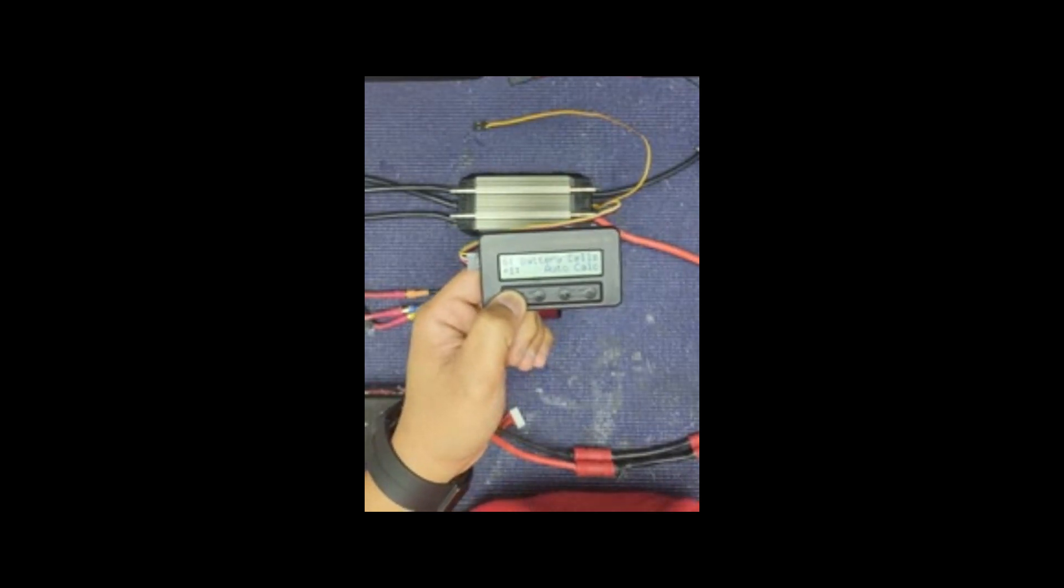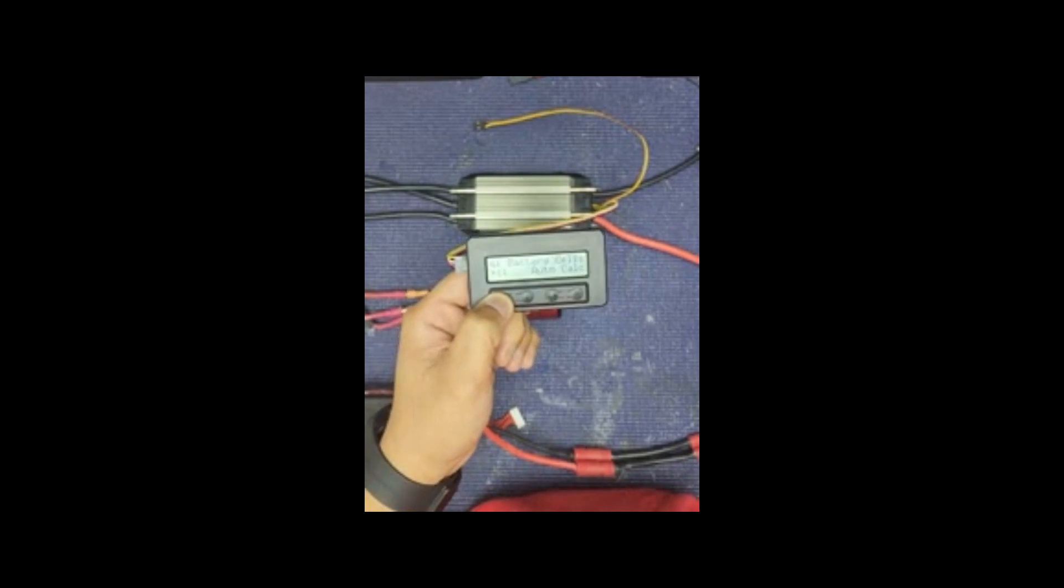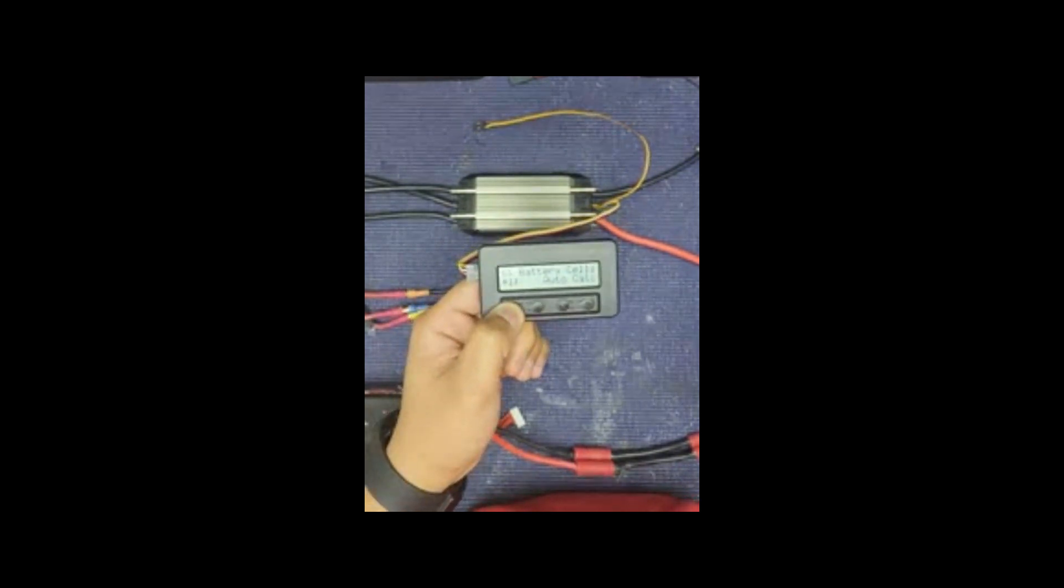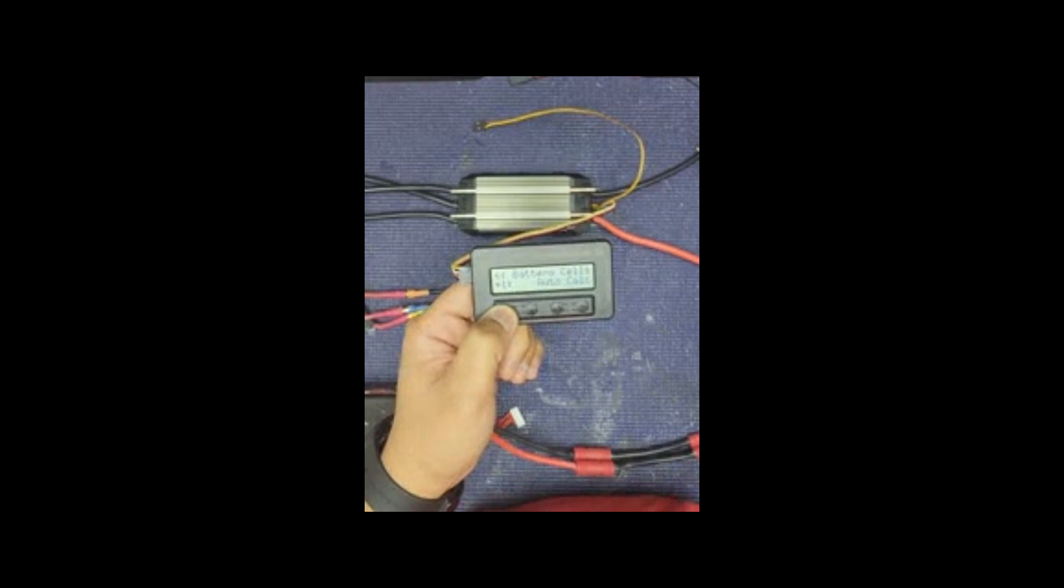Battery cells. You can use per cell, like 2, 4, 6, or you can use auto calculation.